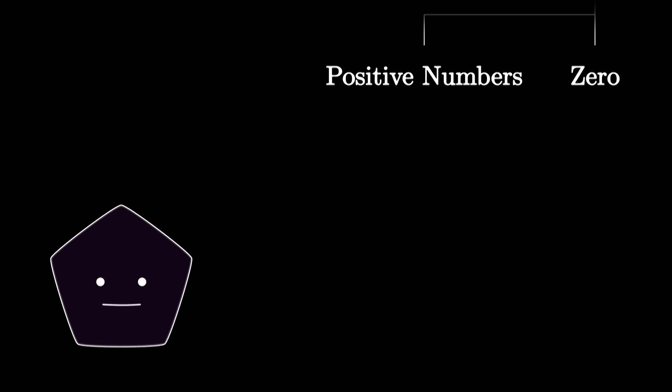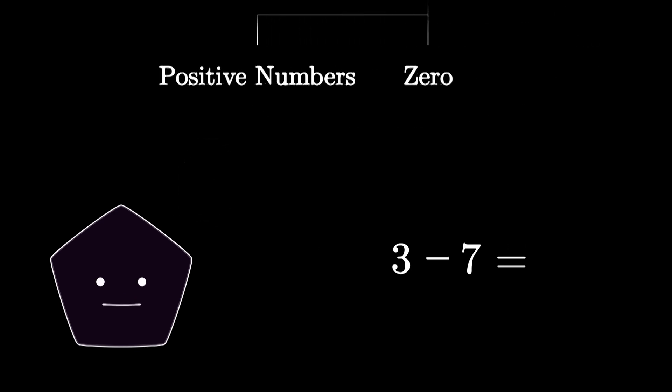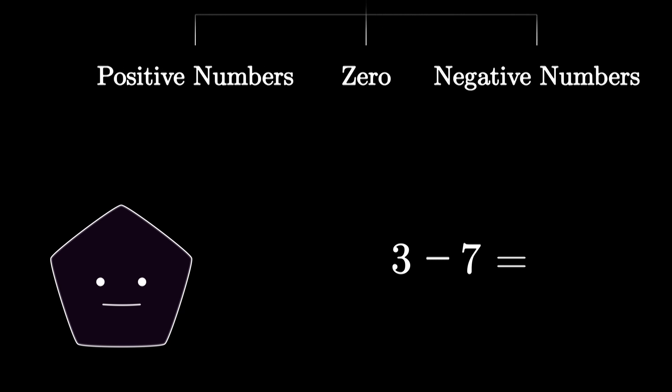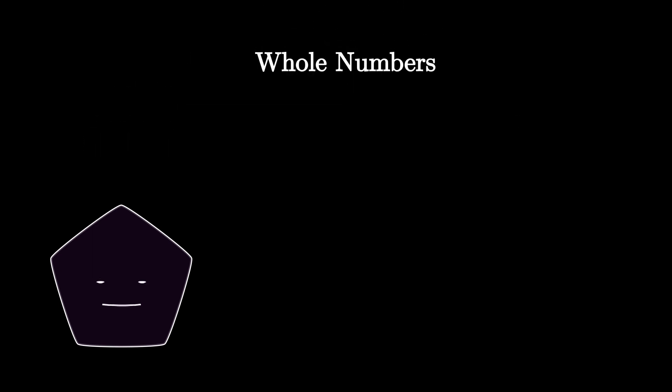Until one day we discovered that some subtraction problems like 3 minus 7 do not make any sense if you only work with positive numbers. To get rid of this issue, we accepted new numbers: the negative whole numbers. Now subtraction makes sense if you work with both positive and negative integers.